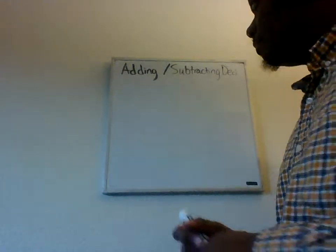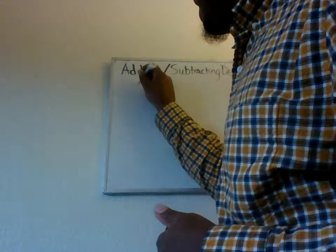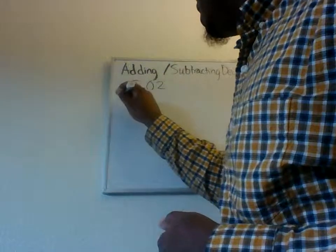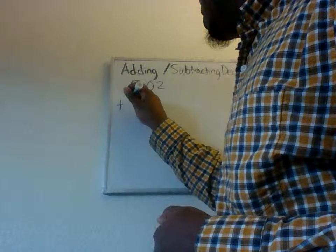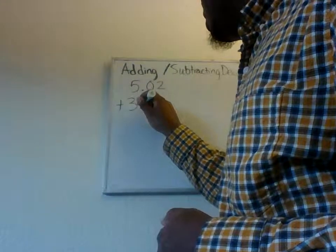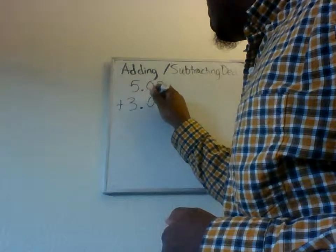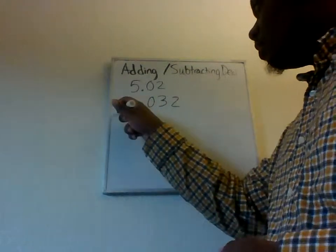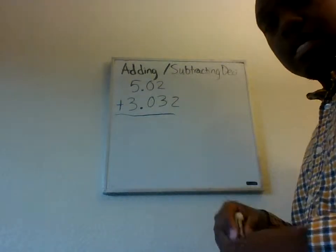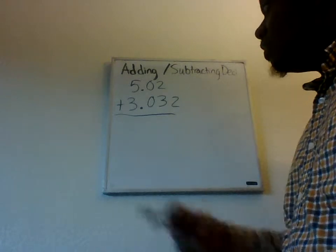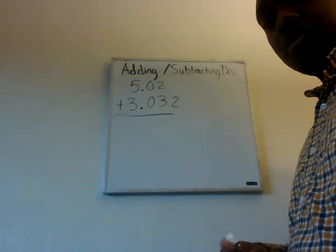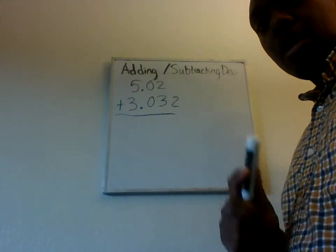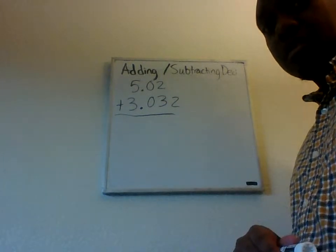Let's look at an example. So, let's say I had the number 5.02 and I wanted to add to it 3.032. Well, in this example, notice how I line things up with the decimal. Whenever you're adding and subtracting decimals, you want to line up your numbers based off the decimal.